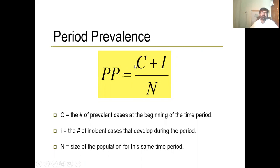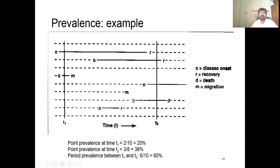Period prevalence is the prevalence between time one and time two. C is the number of prevalent cases at the beginning of the time period, I is the number of incident cases that developed during the period, and N is the size of the population. For example, at time one there were 10 people and 2 were cases. At time two, three new cases developed, so the total cases were 6 out of 10, which becomes 60% — that is the period prevalence.